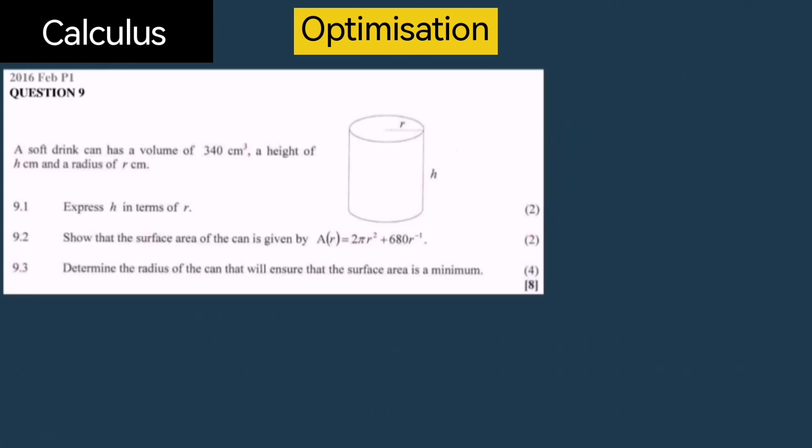Let's try another question. This one is an extract from the 2016 February paper one. A soft drink can has a volume of 340 centimeters cubed, a height of H centimeters and a radius of R centimeters.